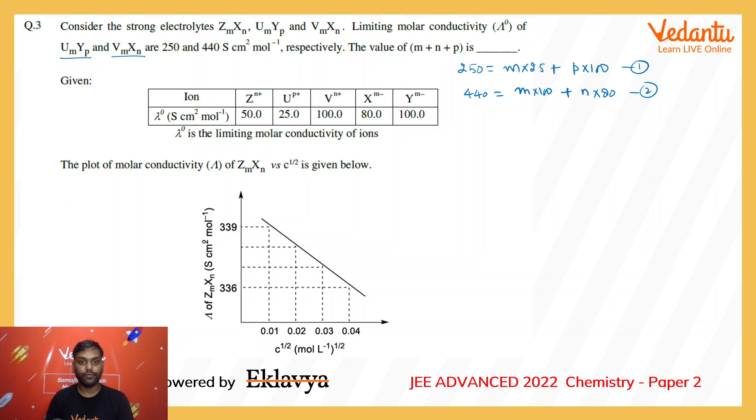I can find its equation as a linear graph: λ - 339 = (336 - 339)/(0.04 - 0.01) × (√C - 0.01). On simplifying, λ comes out to be 340 - 100√C.